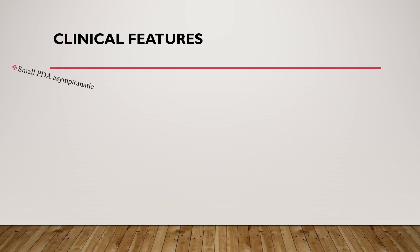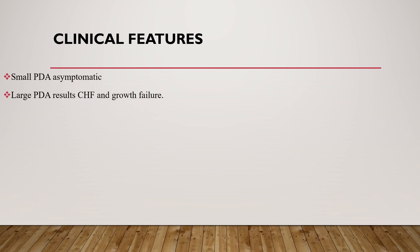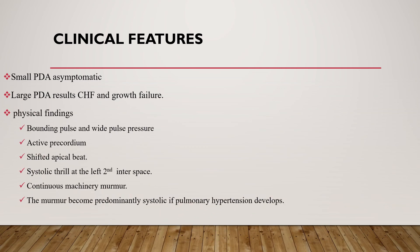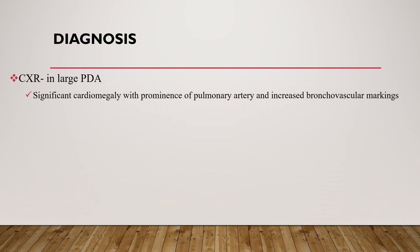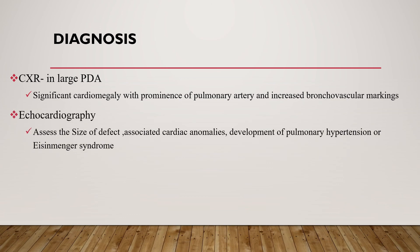Regarding clinical features of PDA: small PDAs are asymptomatic, while large PDAs result in CHF and growth failure. Physical findings include bounding pulses and wide pulse pressure, active precordium, shifted apical impulse, systolic thrill at the left second interspace, and a continuous machinery murmur. The murmur becomes predominantly systolic if pulmonary hypertension develops. On chest X-ray in large PDA, significant cardiomegaly with prominence of the pulmonary artery and increased bronchovascular markings can be seen. Echocardiography can tell us the size of the defect, associated cardiac anomalies, and the development of pulmonary hypertension or Eisenmenger syndrome.